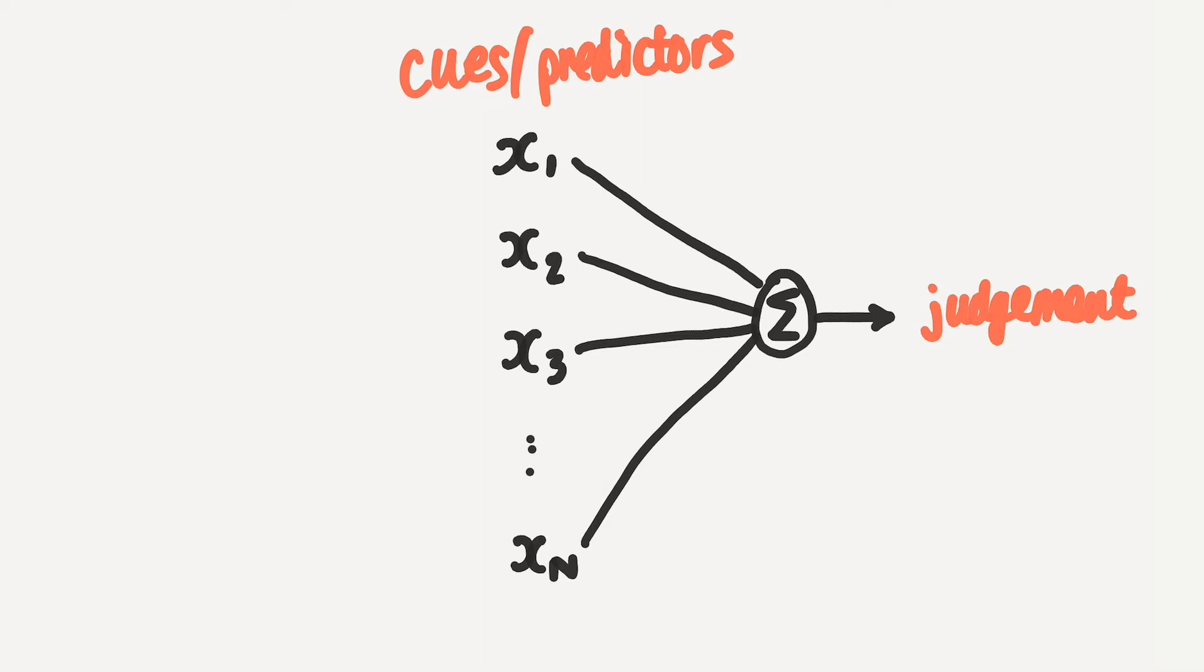But we're not just going to add up the raw predictor variables. What we're going to do instead is to think that we're going to define some weightings. So I'm going to call these beta weightings. So we could imagine you've got beta1, beta2, beta3 and so on.